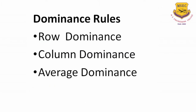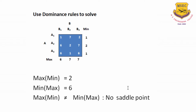Now we also discuss what are the dominance rules in game theory. We have got three dominance rules: row dominance, column dominance, and average dominance. Generally players will play the games which are advantageous to them, so they don't play the non-advantageous strategies. That is the underlying principle in which we consider row dominance, column dominance, and average dominance.